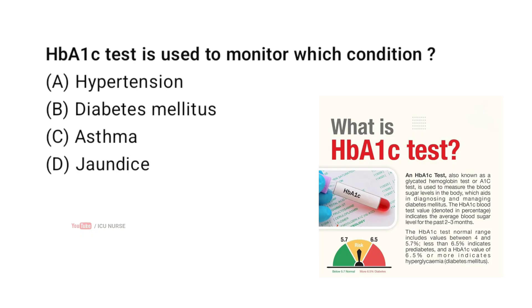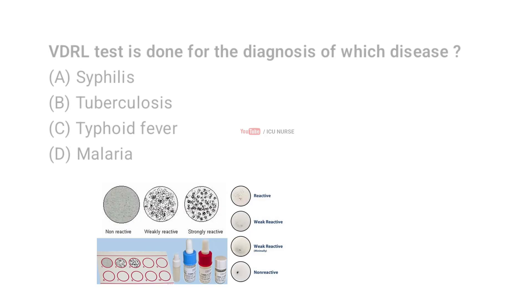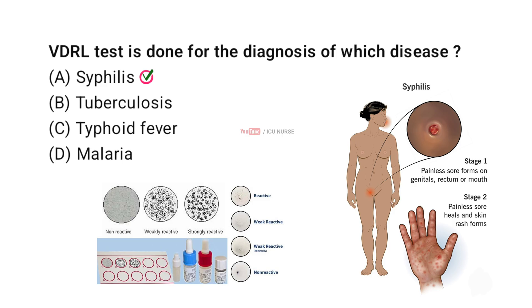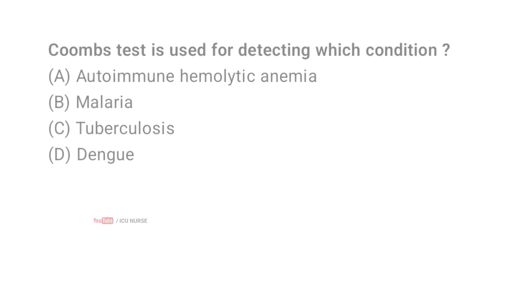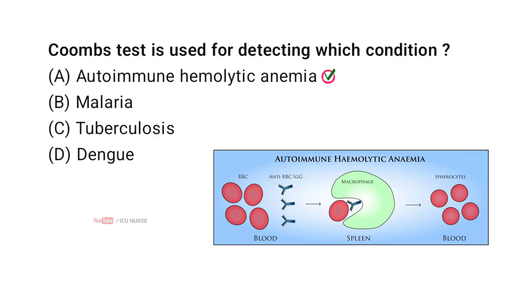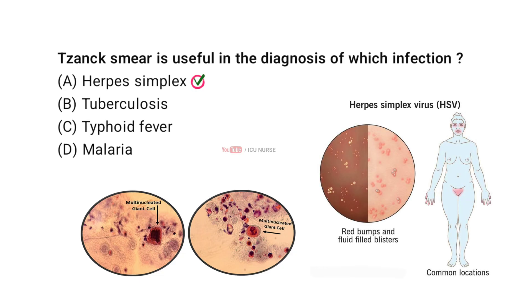HbA1c test is used to monitor which condition? Correct answer B: Diabetes mellitus. VDRL test is done for the diagnosis of which disease? Correct answer A: Syphilis. Coombs test is used for detecting which condition? Correct answer A: Autoimmune hemolytic anemia. Tzanck smear is useful in the diagnosis of which infection? Correct answer A: Herpes simplex.